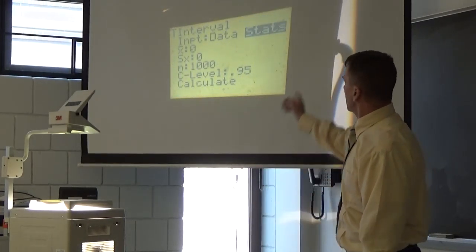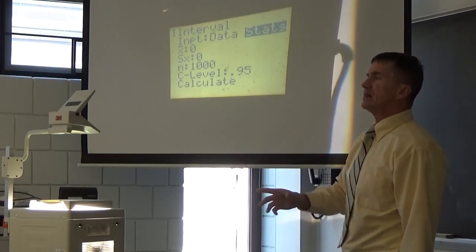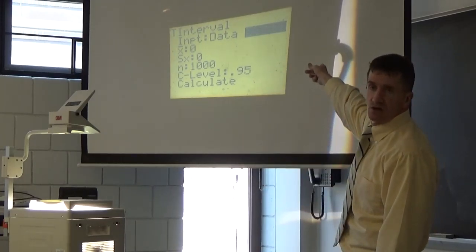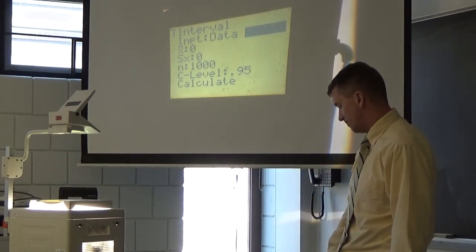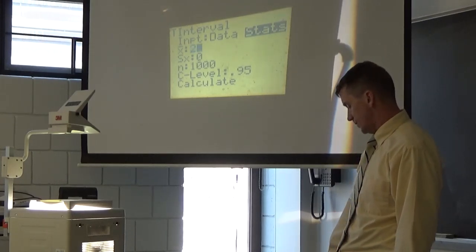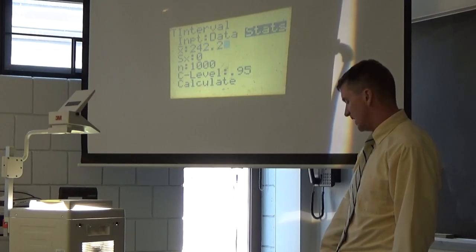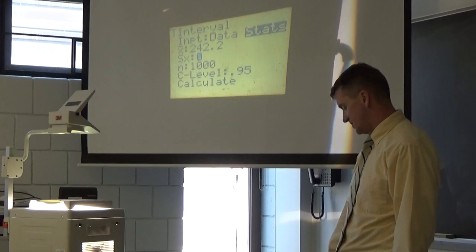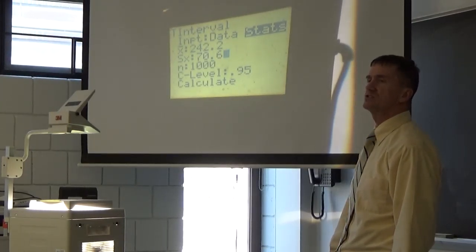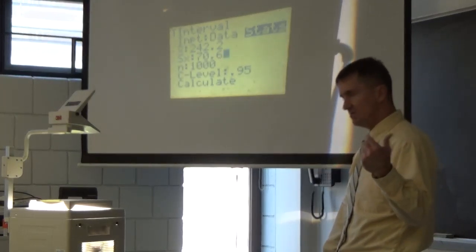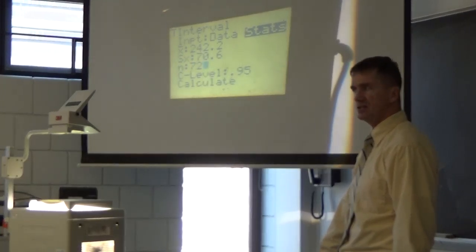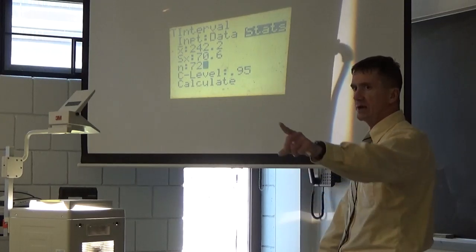I hit number eight. I highly recommend this. Now you got data and stats. Data would be like you collected data yourself. We're just getting the statistics off this textbook. So we're gonna use stats. Highlight that. What's X bar? 242.8. What's SX? 70.6. Sample standard deviation. What's N? 72. What about here? A lot of times this is .95, but in this particular problem it was .90.